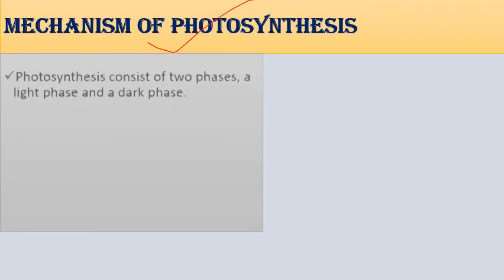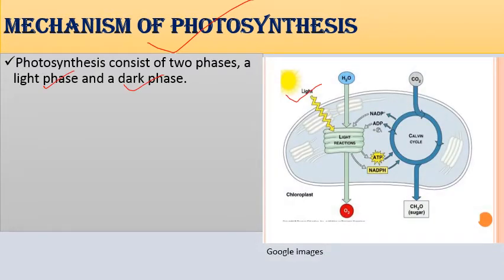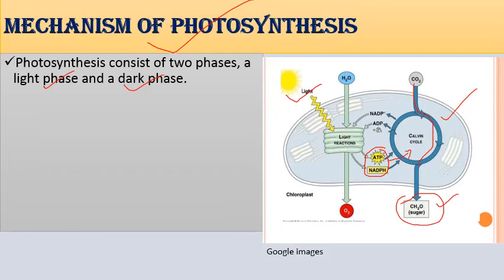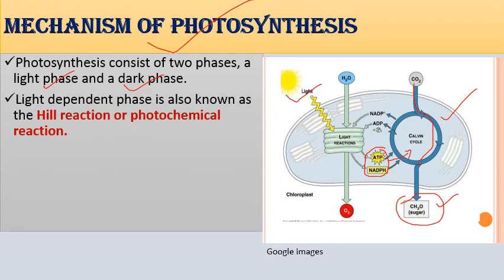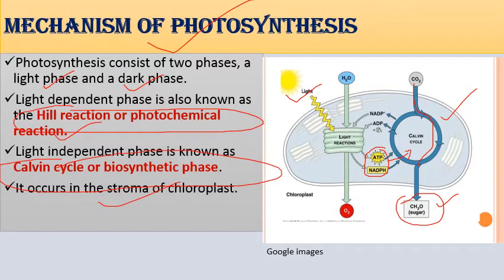Photosynthesis consists of two phases: the light phase, occurring in the thylakoid, where light energy is converted into assimilatory powers ATP and NADPH; and the dark phase, occurring in the stroma, where these assimilatory powers are used in the Calvin cycle to fix CO2 into sugar. The light-dependent phase is also known as the Hill reaction or photochemical reaction, while the light-independent phase is the Calvin cycle or biosynthetic phase.